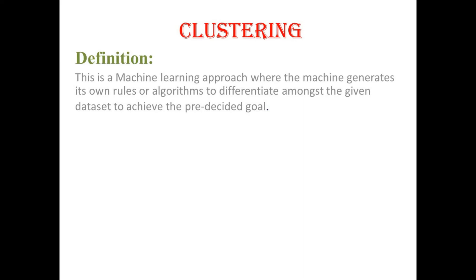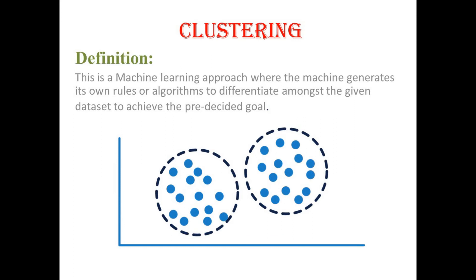The most important algorithm in unsupervised learning is clustering. Clustering is a machine learning approach where the machine generates its own rules and algorithm — we don't give rules, labels, or algorithm. Based on the pattern, it achieves the pre-decided goal. In clustering, objects are grouped such that each member of the group is similar to each other and closely related, but very different from members of another group. As shown in the graph, the groups of data are formed based on data patterns and features, which is why it comes under unsupervised learning.